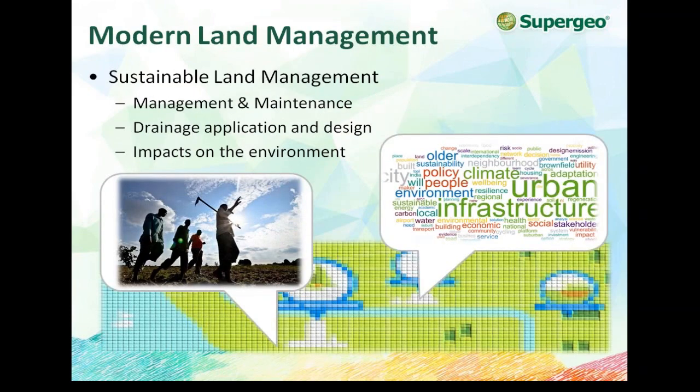In the modern world, land management is more and more about sustainable land management — not only managing but also maintaining the land, such as addressing the decrease of water resources. People are now caring about drainage application and design, and also the impact on the environment. If we're doing some kind of land use change, like building new buildings or changing farm land use, people always care about the environmental impact, and that is very important nowadays.